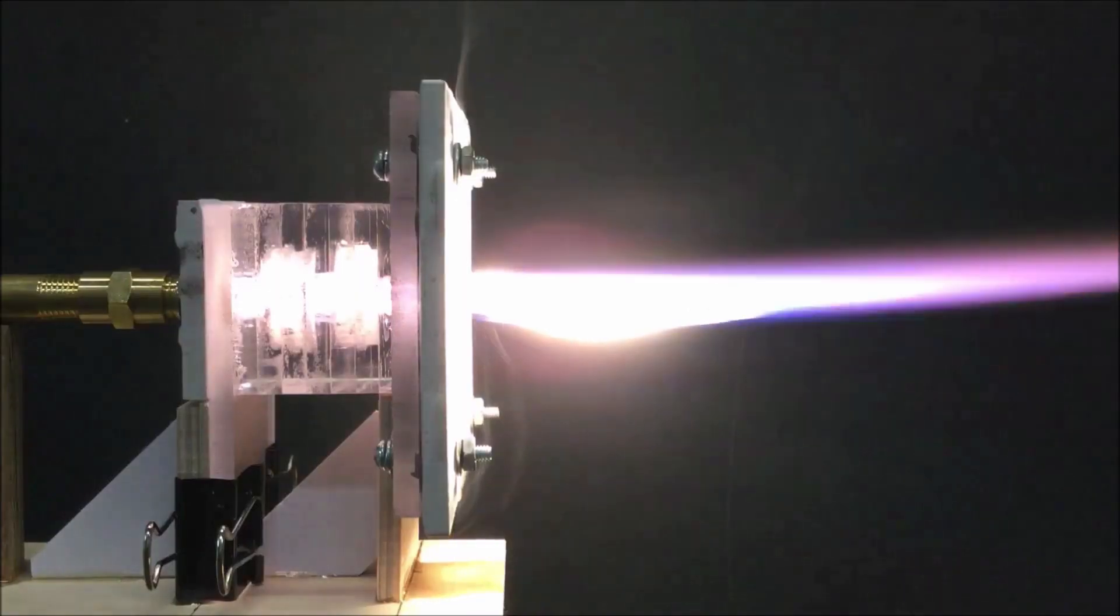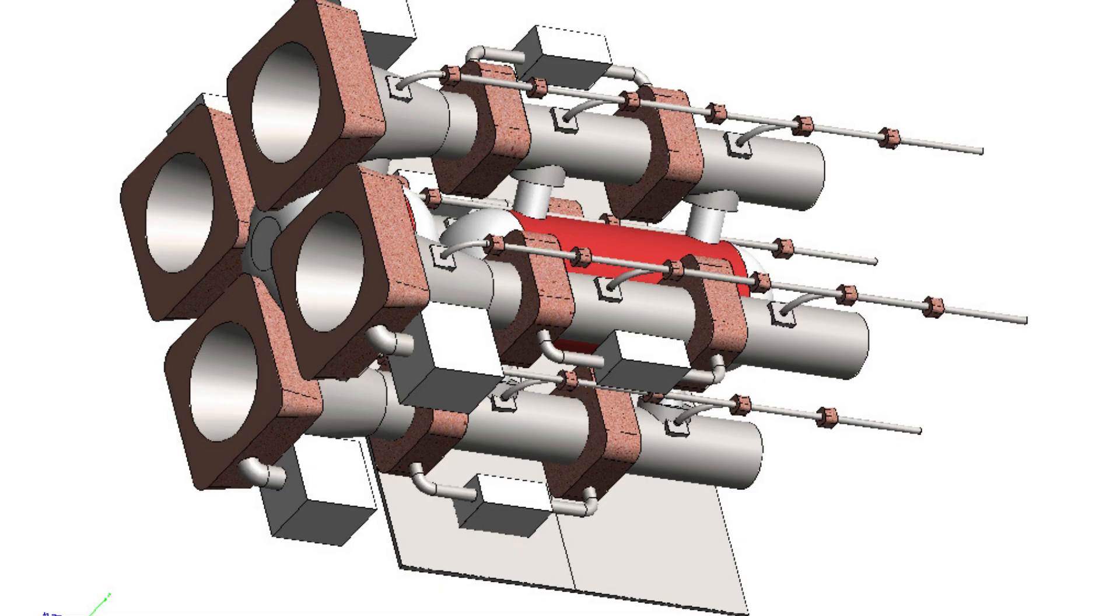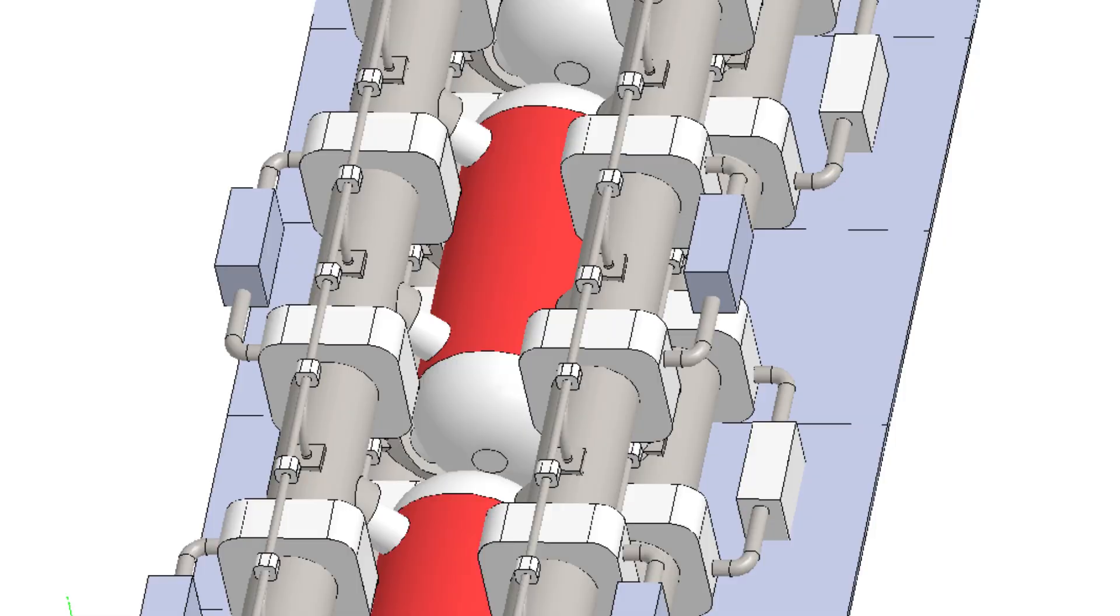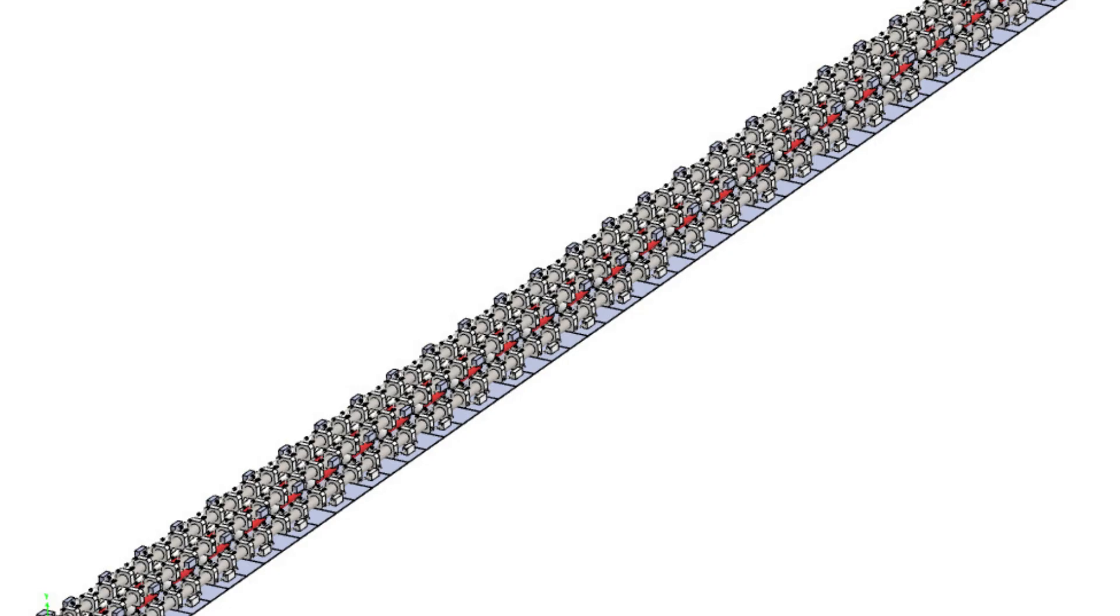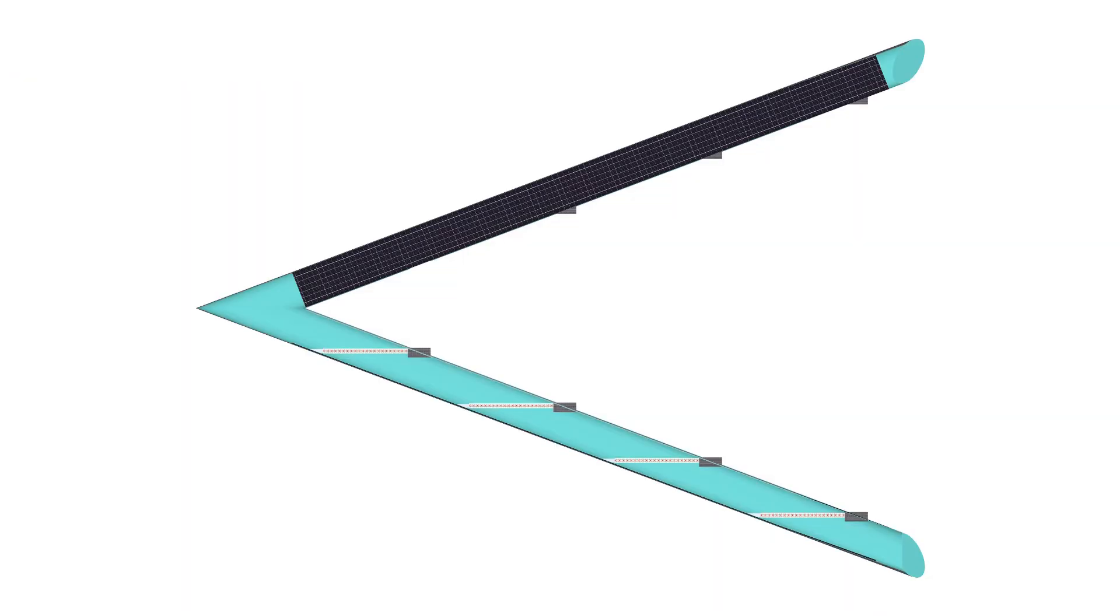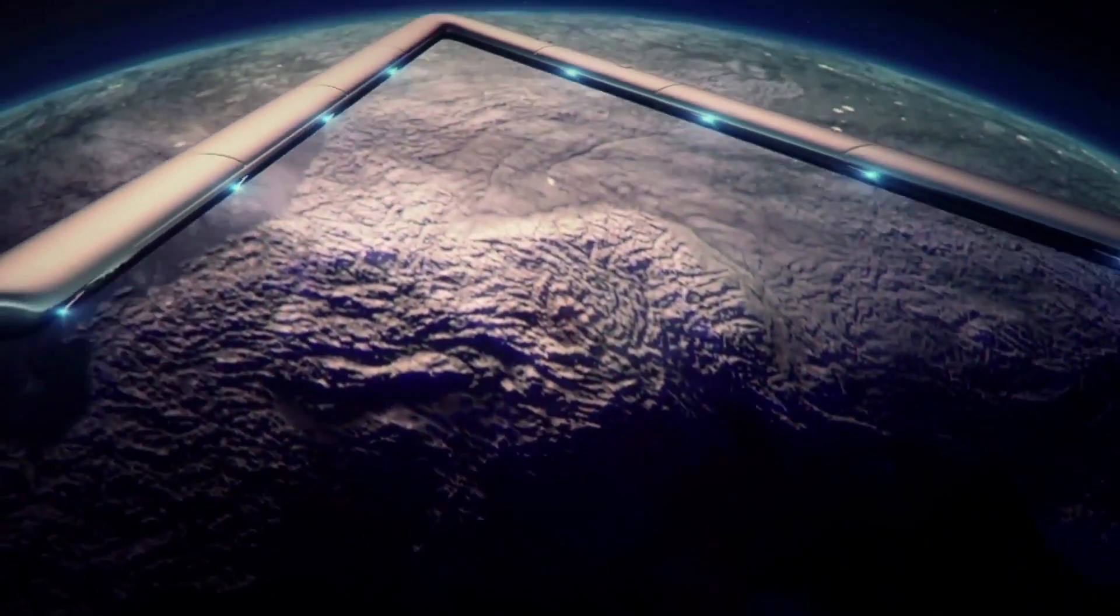After we get all the bugs worked out, the little guy will start scaling up. We envision the final configuration of the motor to be 300 feet long in clusters of four cores. Eight sets will make up the propulsion system for the orbital airship.